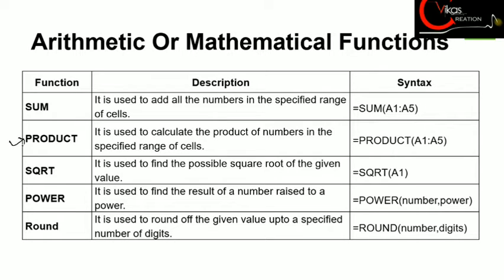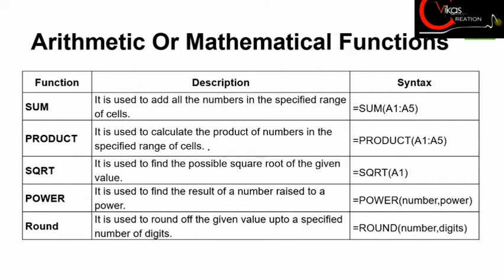Our second function is the PRODUCT function. This function is generally used to multiply the given values — it is used to calculate the product of the numbers in the specified range of cells. For example, if you write equals to PRODUCT(A1:A5), it will return the multiplication of all those numbers.